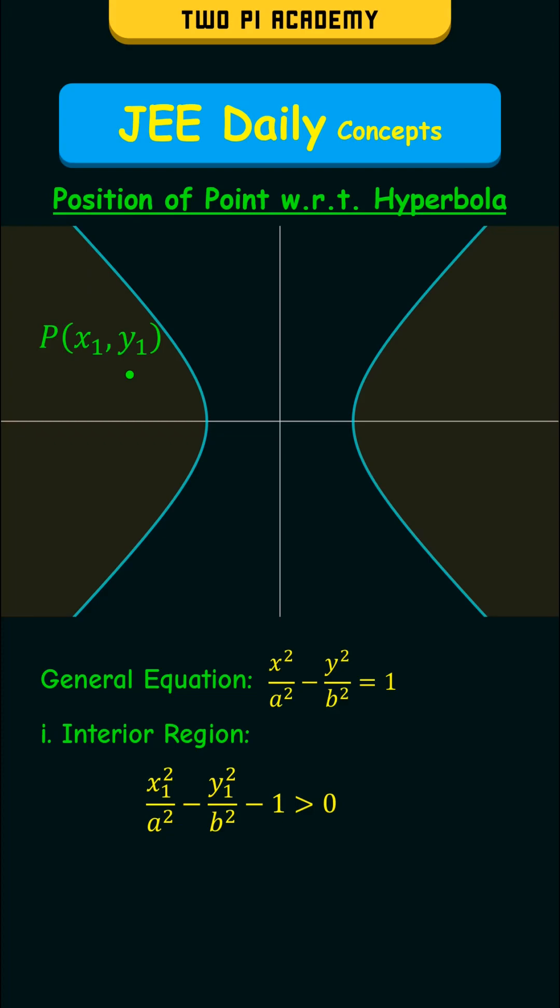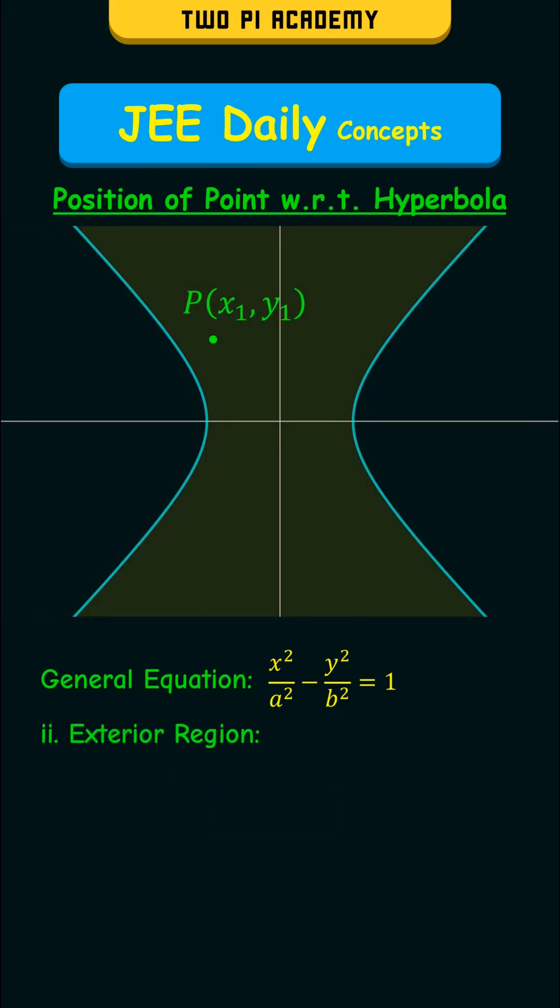And in the second case, the point will be in the exterior region of the hyperbola. And in this case, x1 square by a square minus y1 square by b square minus 1 will be less than 0.